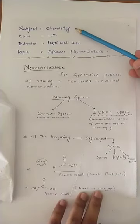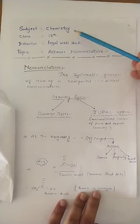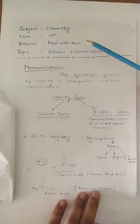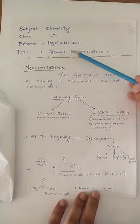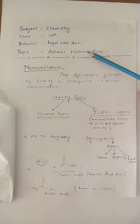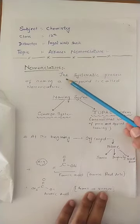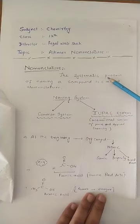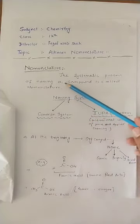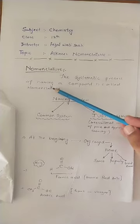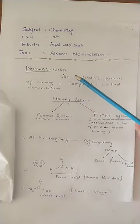Bismillahirrahmanirrahim. Subject: Chemistry, Class 12. I am Faisal Bune, and today the topic is about the nomenclature of alkane or alkane nomenclature. What is nomenclature? Nomenclature means the systematic process of naming a compound is called nomenclature.